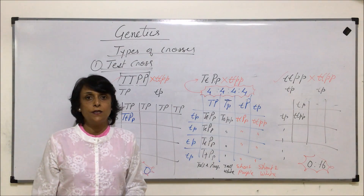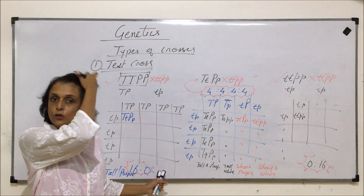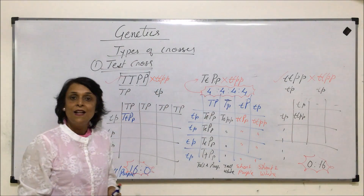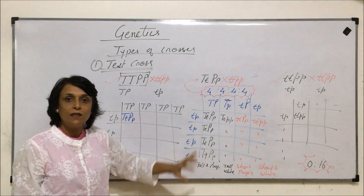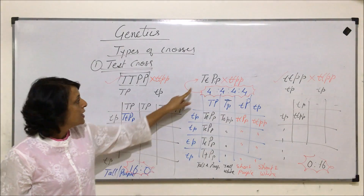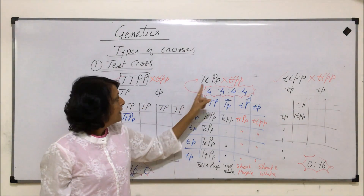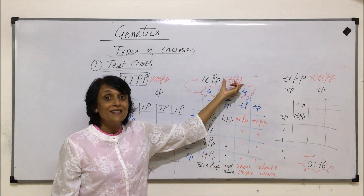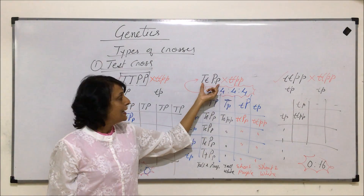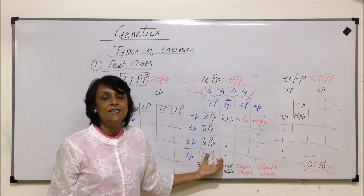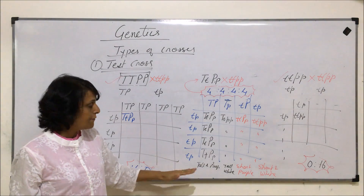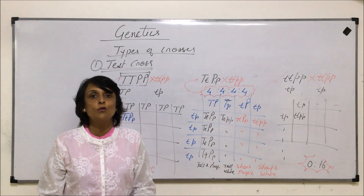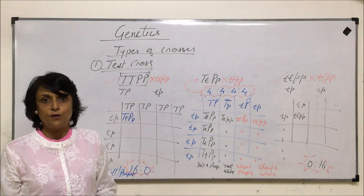Knowing these ratios will also help in exam questions. When a genetics question gives a cross of an unknown organism with a pure homozygous recessive, we should recognize it as a test cross. If we know the genotype of the unknown, we can easily conclude the ratio — and vice versa. These ratios are very important in both monohybrid and dihybrid test crosses.